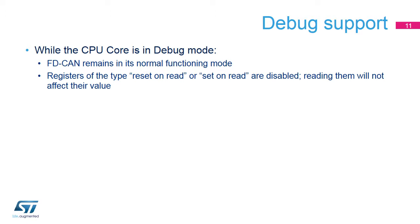While the CPU core is in debug mode, that is, stopped at a breakpoint, FD-CAN remains in its normal functioning mode. In particular, reception continues as normal, and this may lead to reception overrun errors when FIFOs or buffers are full. Registers of the type Reset on Read or Set on Read are disabled. Reading them will not affect their value.